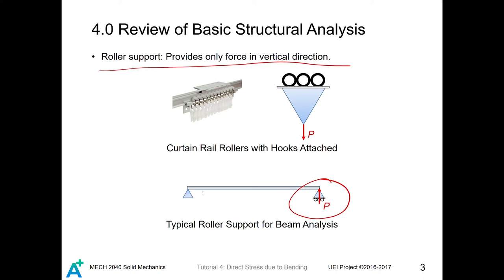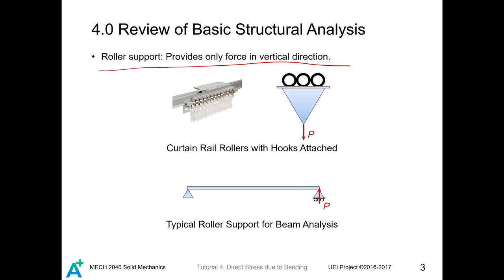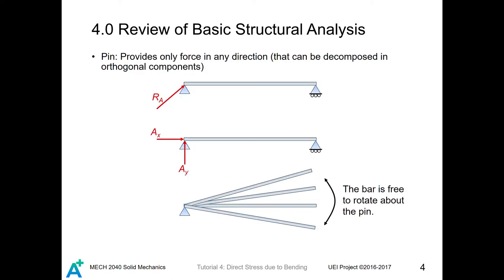In beam analysis, the typical roller support is like this. For a simple beam, there is a pin as well as a roller support. As you can observe, the roller support has some wheels under it. Therefore, it will just provide a vertical force.